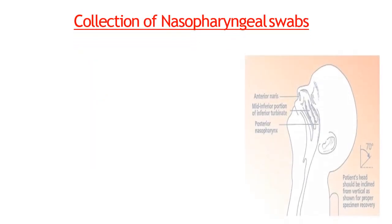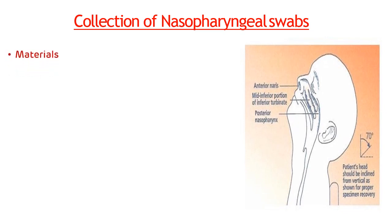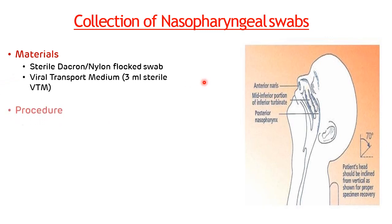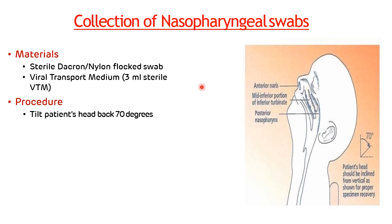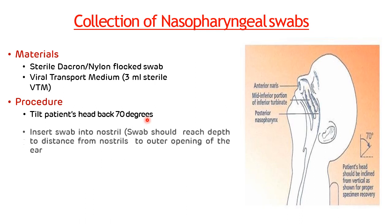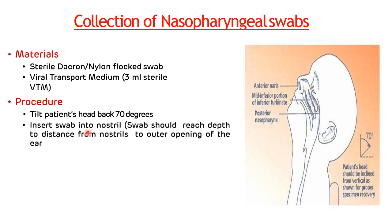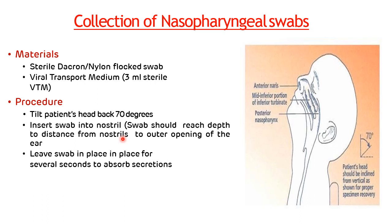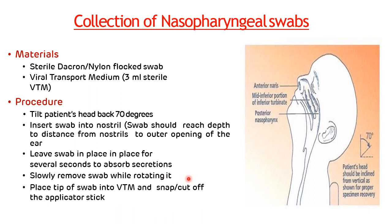For the nasopharyngeal swab, materials required are a sterile Dacron or nylon flocked swab and viral transport medium. The procedure is: tilt the patient's head back 70 degrees, insert the swab into the nostril, allow the swab to remain in place for several seconds to absorb secretions, slowly remove the swab while rotating it, and place the swab into viral transport medium.